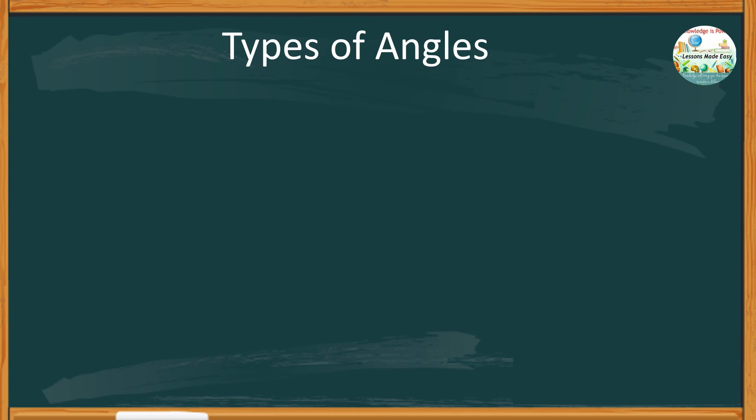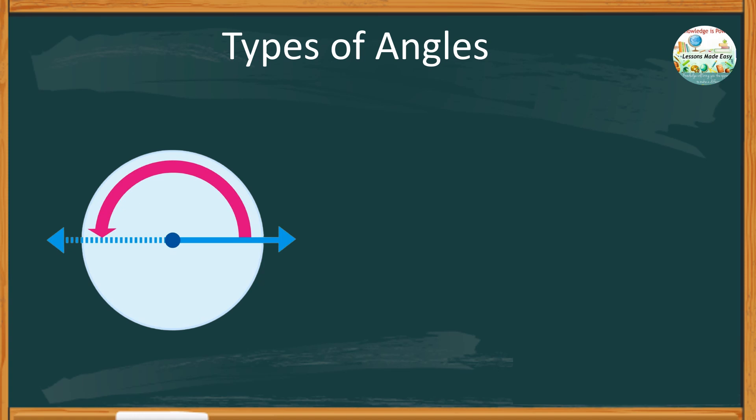Sometimes you can see angles forming a straight line. We call this a straight angle. You might think that straight lines and straight angles are similar.